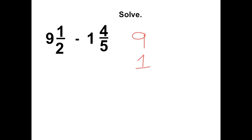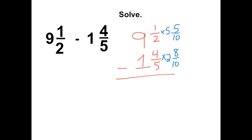Another way to do this would be to line up your whole numbers and line up your fractions. Find the least common denominator between the fractions. We have to multiply by 5 and we get 5 over 10. Since we can't subtract 8 over 10 from 5 over 10, we have to borrow from the whole number — taking 1 from the whole number. Adding 1 whole to this fraction, since the denominator is 10, that 1 whole would be 10 over 10, which makes this fraction 15 over 10.